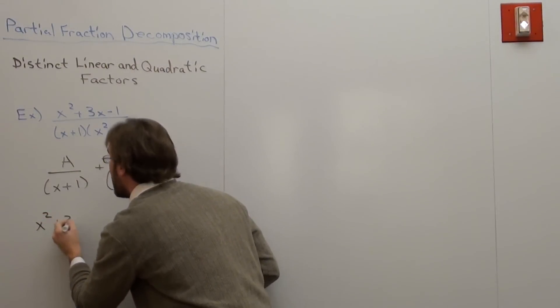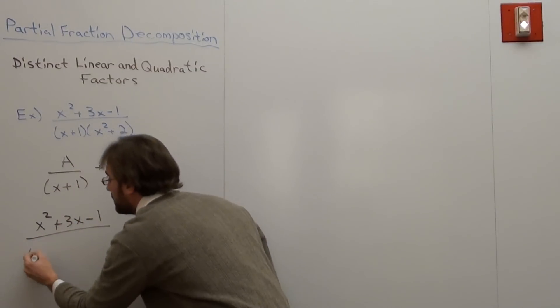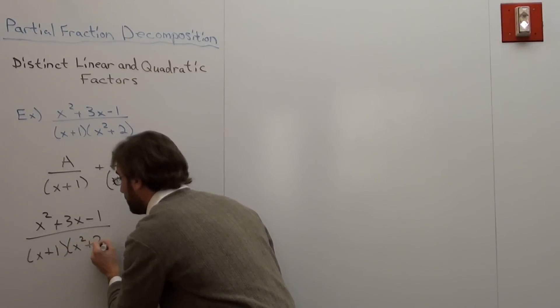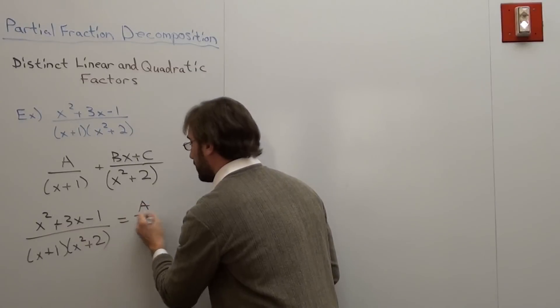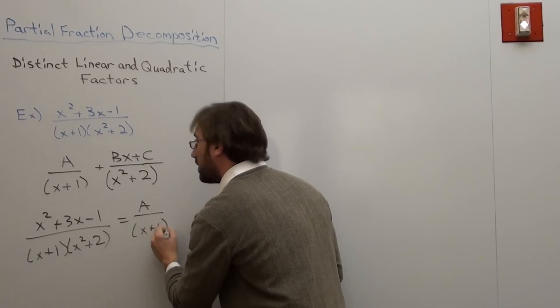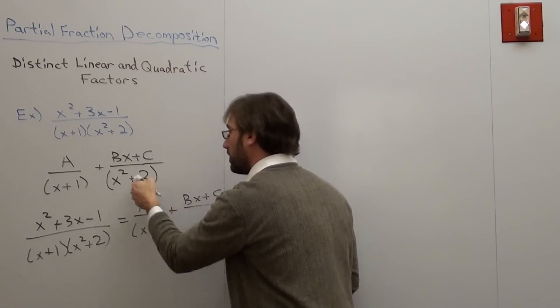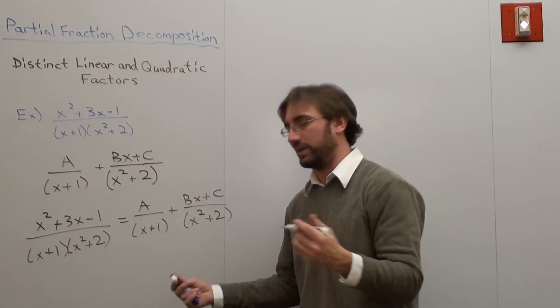So x squared plus 3x subtracted by 1 over x quantity x plus 1 times the quantity x squared plus 2, pardon me, is equal to this bad boy right here. A over x plus 1 and then plus bx plus c over x squared plus 2. I should have just rewrote it there, but I didn't.